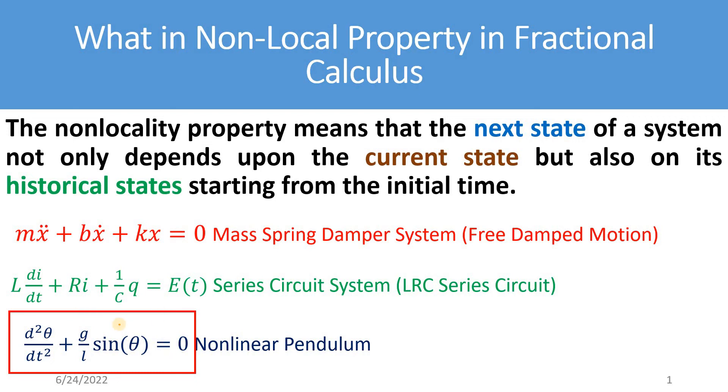For example, Euler's method uses the value from the previous iteration to go to the next iteration. That is why the phenomena or the property is not the non-locality property in that case, I mean, in the case of classical calculus.